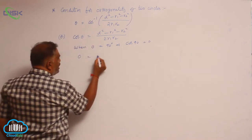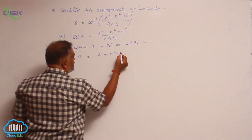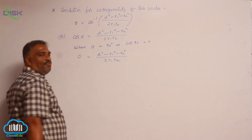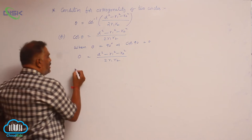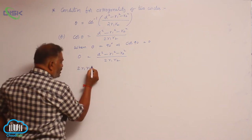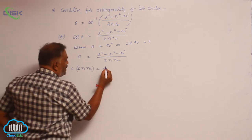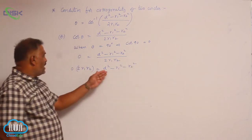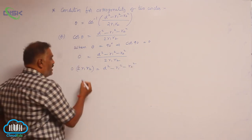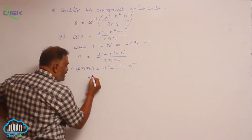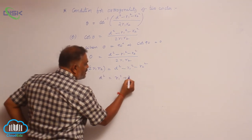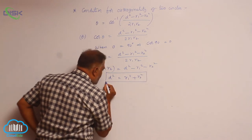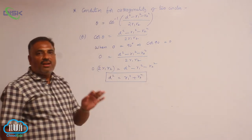Substituting, 0 is equal to (d squared minus r1 squared minus r2 squared) divided by 2 r1 r2. By cross multiplication, 2 r1 r2 into 0 equals d squared minus r1 squared minus r2 squared. Sending these two terms to the other side, d squared equals r1 squared plus r2 squared. This is the condition for the two circles cutting each other orthogonally.